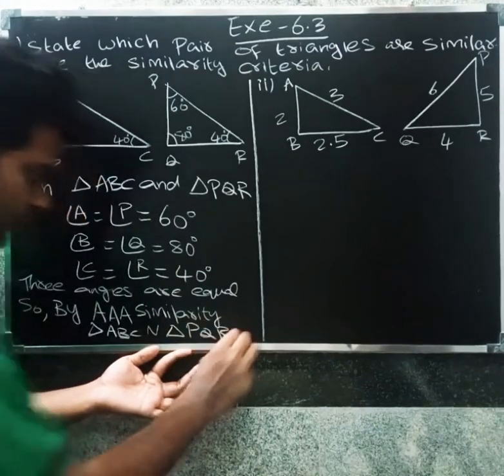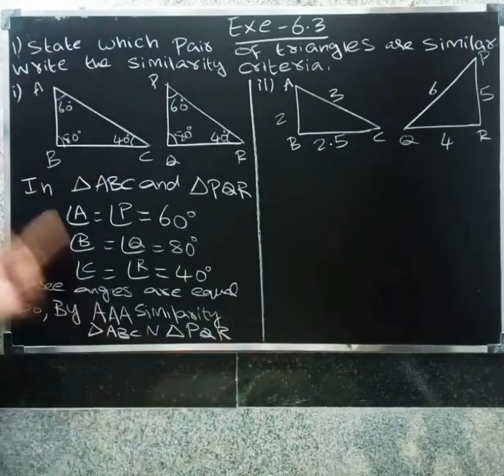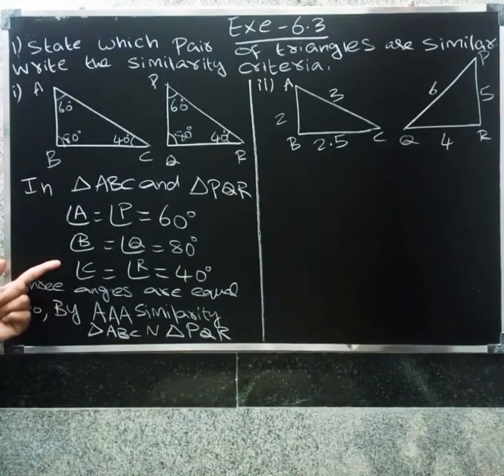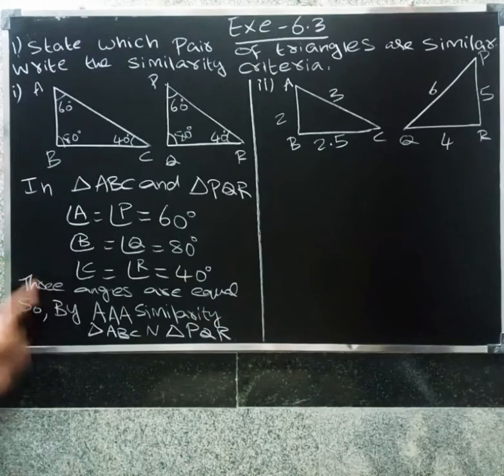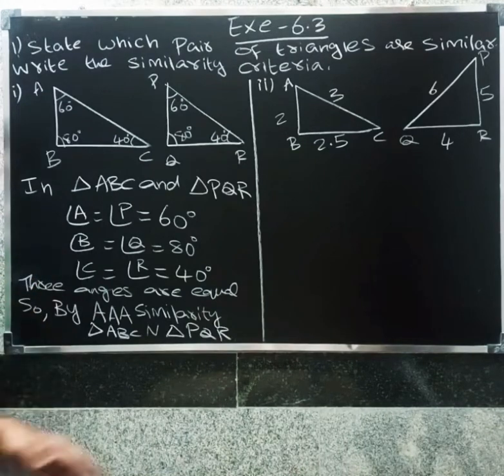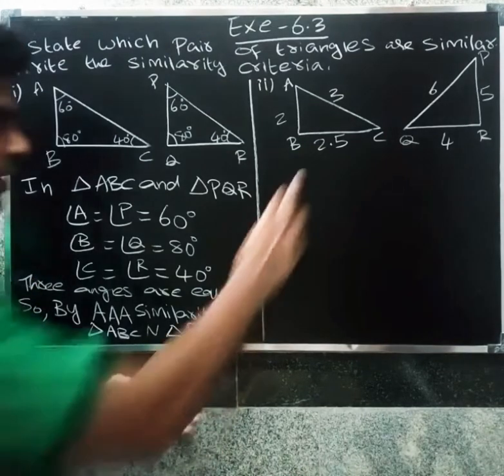By AAA similarity criterion, triangle ABC is similar to triangle PQR.